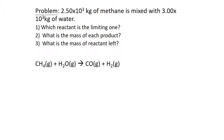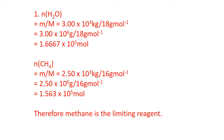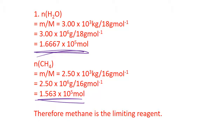The number of moles of water is mass over molar mass: 3,000 kilograms converted to grams divided by 18 grams per mole, giving 1.667 × 10⁵ moles. For methane: 2,500 kilograms converted to grams divided by 16, giving 1.563 × 10⁵ moles. This number is smaller, therefore methane is the limiting reagent.